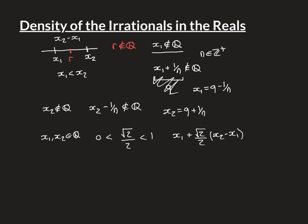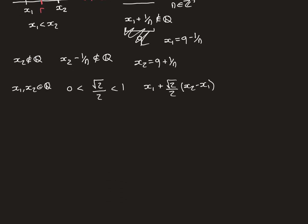If you were to add on just x2 minus x1 to x1, that's the full length of the interval, bringing you to x2. But we've multiplied by this constant between 0 and 1, so we only add a fraction of that length — about 0.7 times it — ending up strictly between the two. So x1 plus (√2/2)(x2 − x1) lies between x1 and x2, and my claim is that it is an irrational number. Again, we can prove this by contradiction: suppose it equals a rational number q.